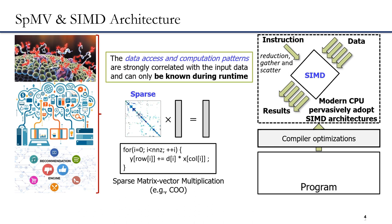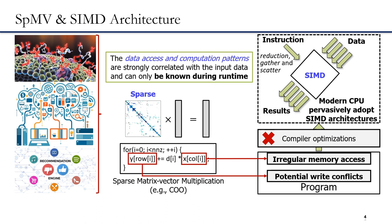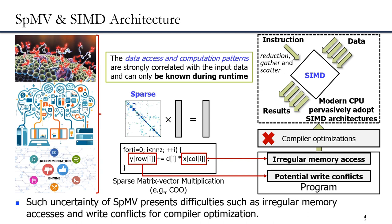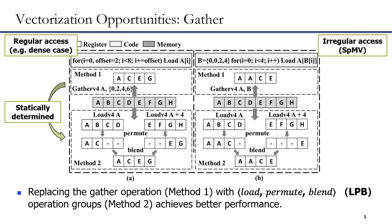One major difference between sparse and dense matrix vector multiplication is whether the data access and computation patterns can be known before runtime. For SPMV, the above patterns are strongly correlated with the input data and can only be known during runtime. Such uncertainty of SPMV presents difficulties such as irregular memory access and makes it quite complex for compiler optimization. One reason for the failure of modern compilers to generate efficient vectorization for SPMV is due to the statically unknown memory access patterns. For instance, when loading data from discontinuous memory addresses, compilers always generate gather operations. However, we find that replacing the gather operation with load-permute-planned operation groups achieves better performance.